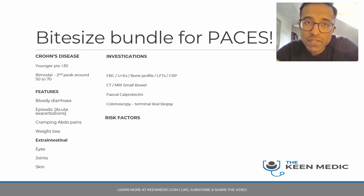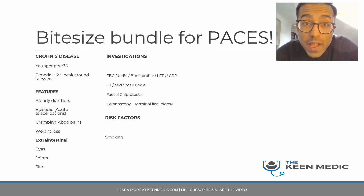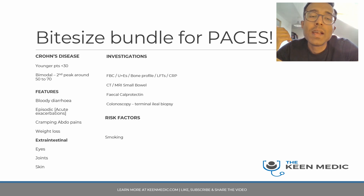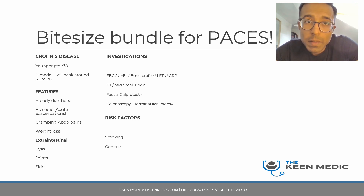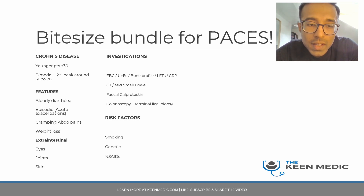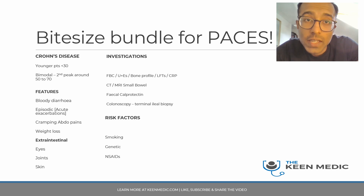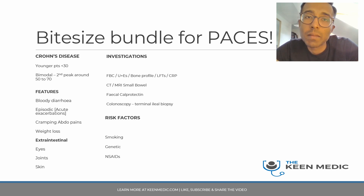In terms of risk factors: smoking increases the risk of developing Crohn's disease by two to three times. There is also a genetic factor — if a family member has inflammatory bowel disease, you are at higher risk. Taking non-steroidal anti-inflammatories is also a recognised risk factor for Crohn's disease.